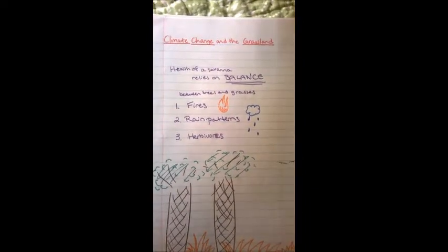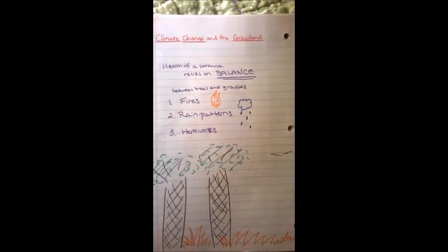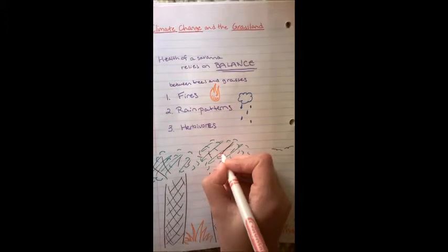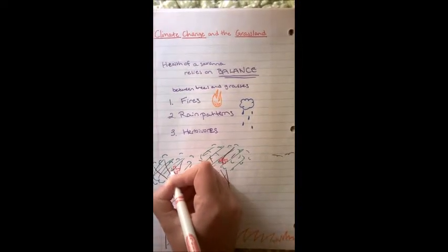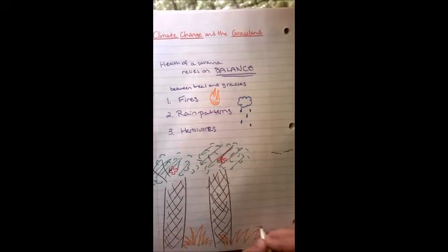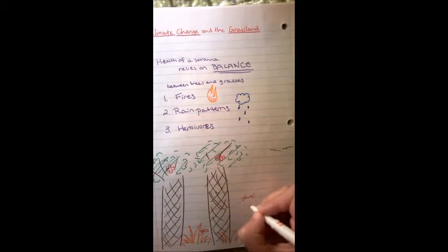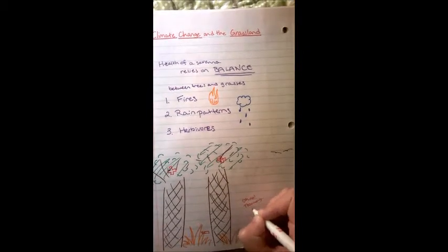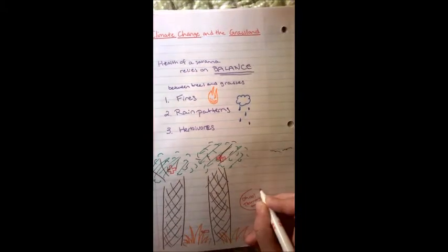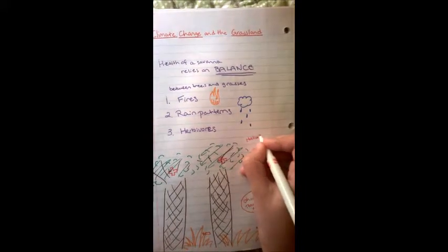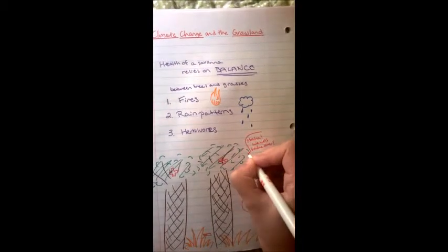When all of this is disrupted, the tree population goes up. When tree population increases, they compete for nutrients with grasses and they win. Grass populations go down and that affects biodiversity in the grassland. If too many trees inhabit the area, they take over and it becomes a forest, no longer grassland, hurting the biodiversity of the savanna and causing many species to lose their habitat.